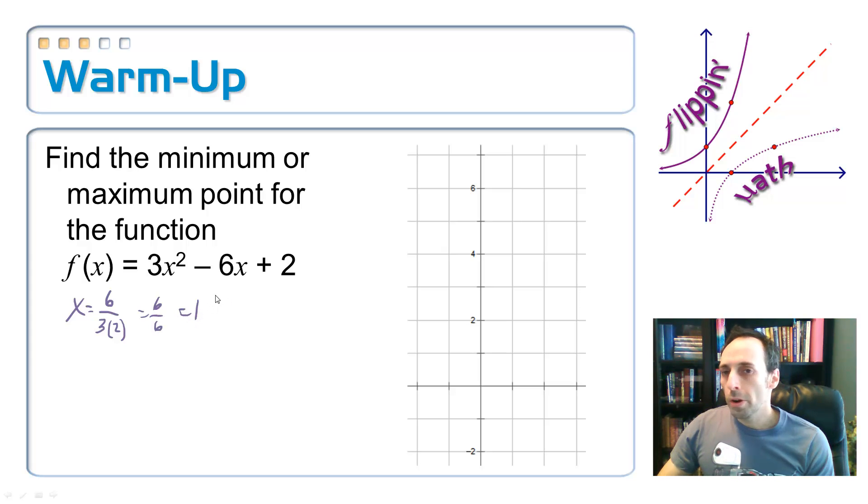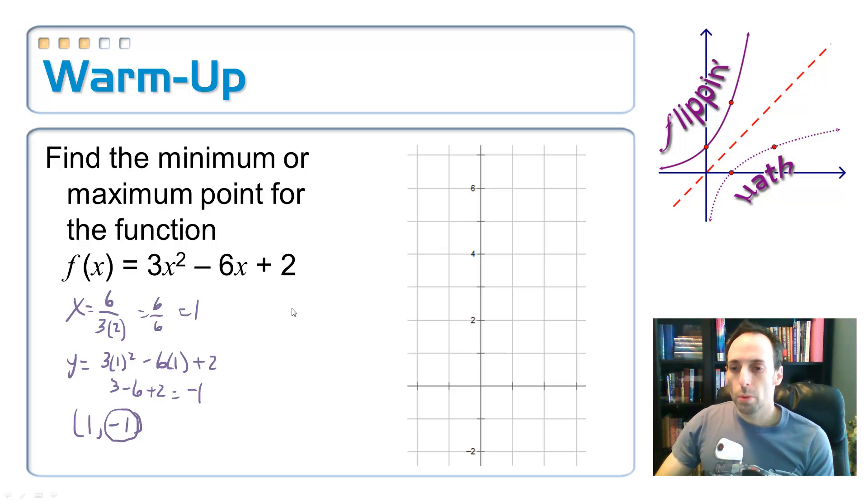Is that the maximum or minimum point? No. We've got to plug it back in and see. So, y is equal to 3 times 1 squared minus 6 times 1 plus 2. So, I get a 3 minus 6, which is negative 3 plus 2 is negative 1. So, I have a vertex that's at (1, negative 1), but my minimum or maximum point is at negative 1. Which one is this? Well, since this a value is positive, we know we've got ourselves a U-shape, which makes this a minimum point.